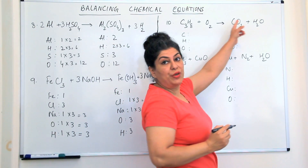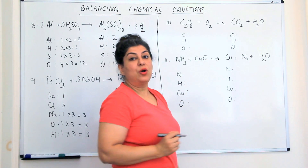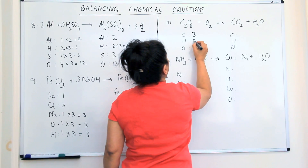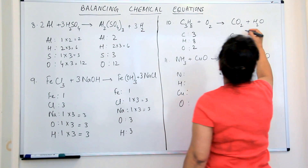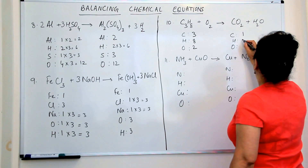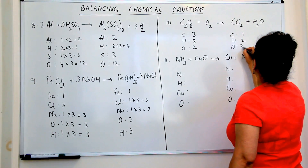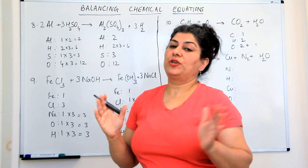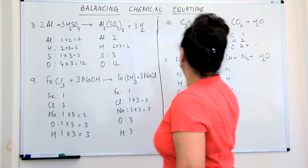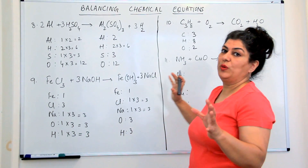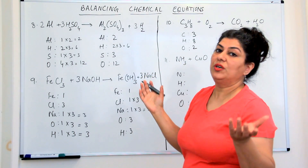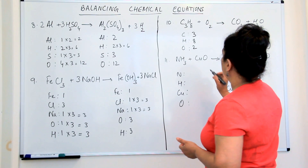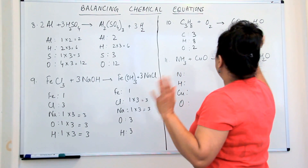Let's take the next question. C3H8 combines with oxygen to give you carbon dioxide and water. How many carbons? Three carbons. Hydrogens? Eight hydrogens. How many oxygens? Two. On the product side: carbon, one; hydrogen, two; oxygen, two plus one. Whenever you have an element in more than one reactant or product, write them separately so that whatever you multiply applies to only one reactant or product. Oxygen we'll come to in the end, hydrogen also — let us first balance carbon.